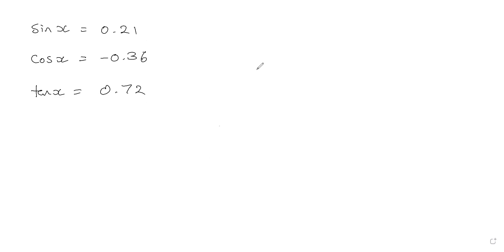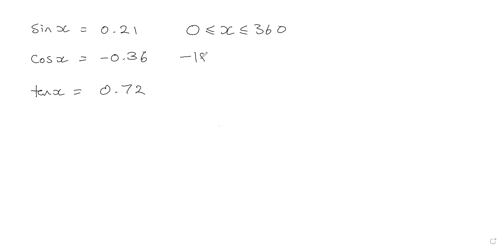If you do this confidently you're really flying. Now here's the next thing: every single time you see one of these questions you're going to be given a range for x. So you'll get something like x is between 0 and 360, or between minus 180 and 180 — it could be anything, like 0 to 180. This range is crucial and I'll speak about that in a second.